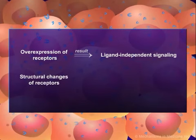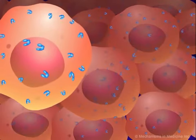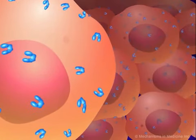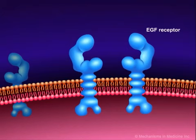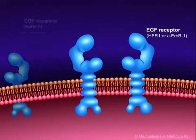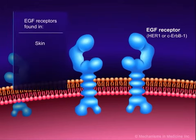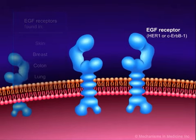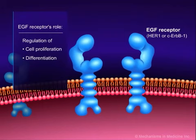Gross overexpression of growth factor receptors can result in ligand-independent signaling, where receptors are active in the absence of stimulating molecules. Structural changes to a receptor can also lead to ligand-independent activation. For example, truncated versions of the epidermal growth factor receptor, where much of the intracellular domain is missing, are constitutively active. EGFR receptor, also known as HER1 or ERB1, is a member of a subfamily of type 1 receptor tyrosine kinases. These receptors are found primarily in the membranes of normal epithelial cells from skin, breast, colon, and lung, amongst others. EGFR receptor and its ligands play an essential role in the regulation of cell proliferation, differentiation, and survival.